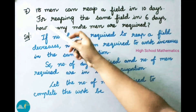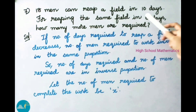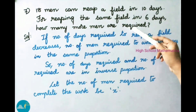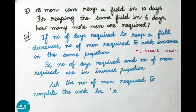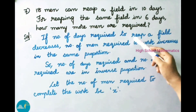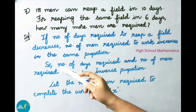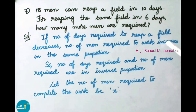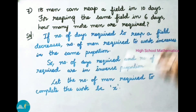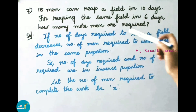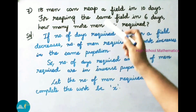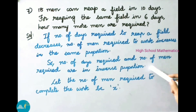See now question number 7. 18 men can reap a field in 10 days. For reaping the same field in 6 days, how many more men are required? Let us see the solution. If number of days required to reap a field decreases, number of men required to work increases in the same proportion. Here, number of days required to reap a field decreases from 10 days to 6 days, so number of men required to work in the field increases. So, number of days required and number of men required are in inverse proportion.